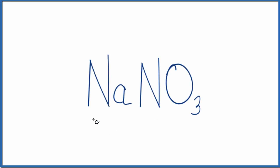Let's look at the number of ions in NaNO3. This is sodium nitrate. To do this, you need to recognize that you have a metal here and then a group of nonmetals. So this is an ionic compound.